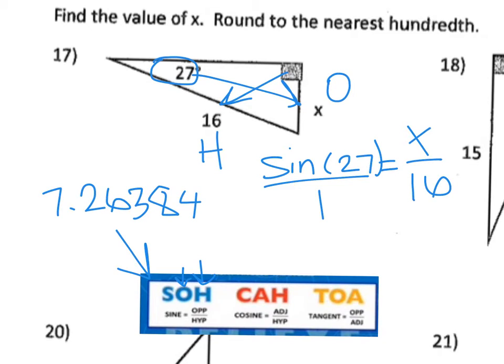The directions asked me to solve to the nearest hundredth, which is the second decimal place. I look at the third number to see whether to keep it the same or raise it. Because it's a 3, I keep it the same — so X is equal to 7.26.